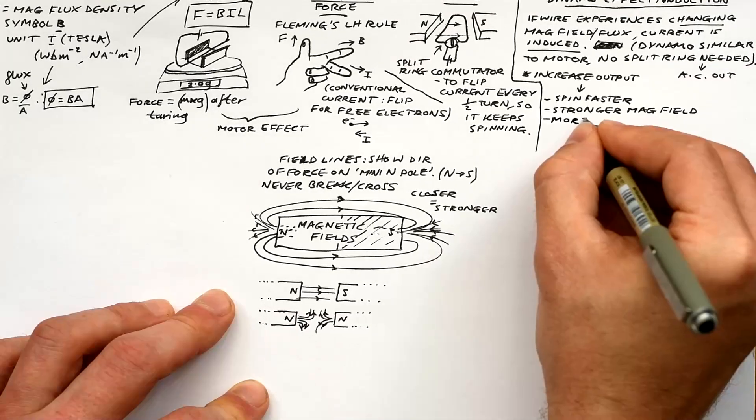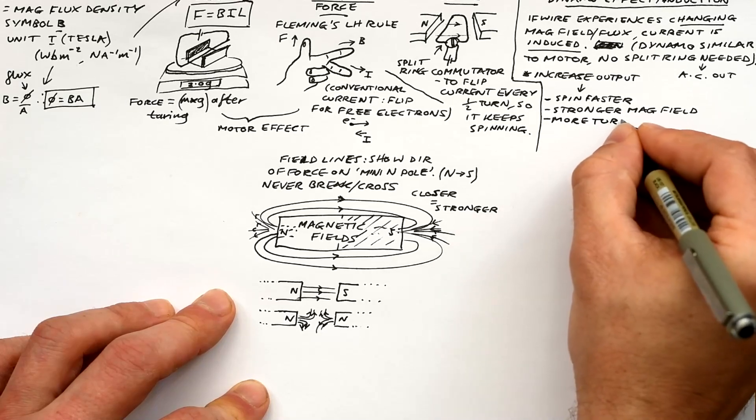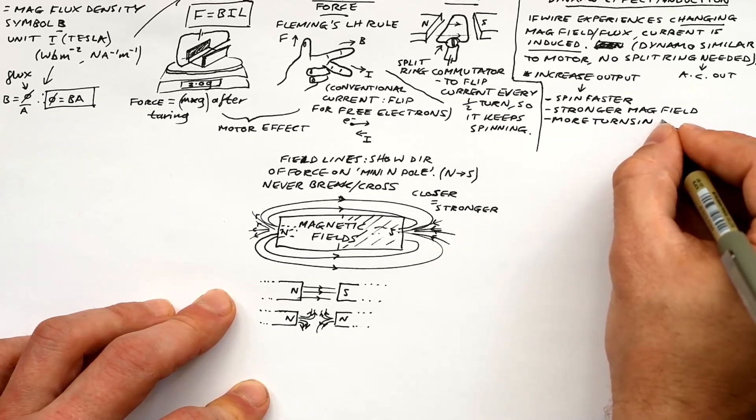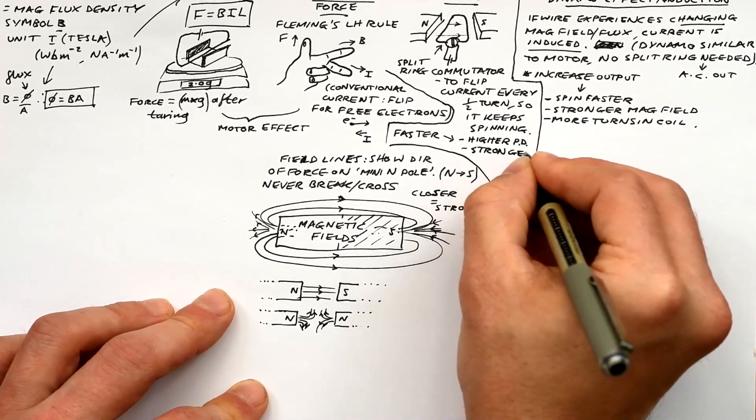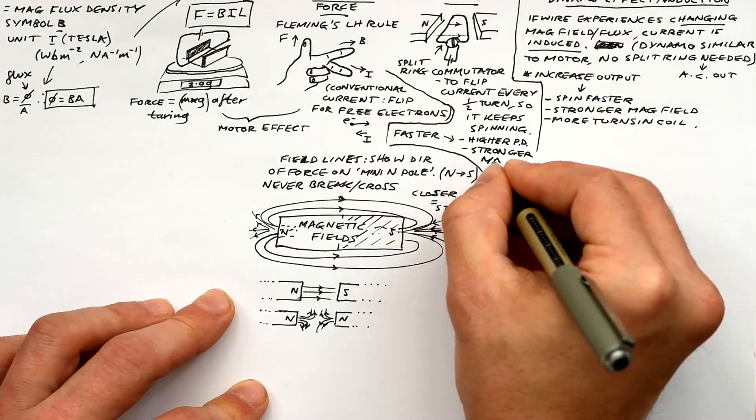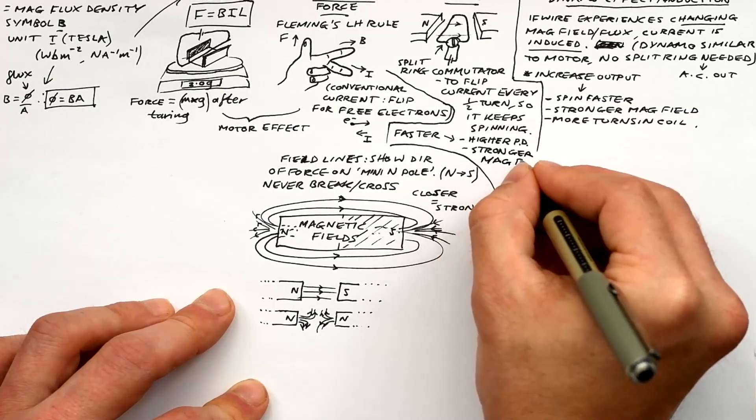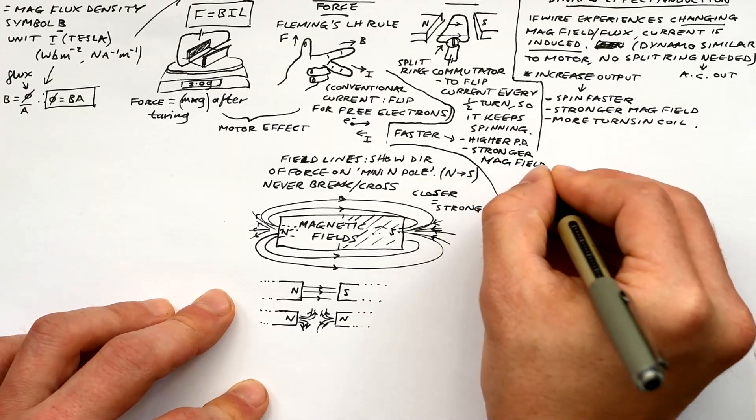If you want to increase the output of a dynamo, then you can put more turns, more loops in the coil. You can use a stronger magnetic field or you can obviously just turn it faster. For a motor, if you want to increase the speed, then the first two for the dynamo also apply, but then we can increase the voltage or PD of the motor and that will make it turn faster.